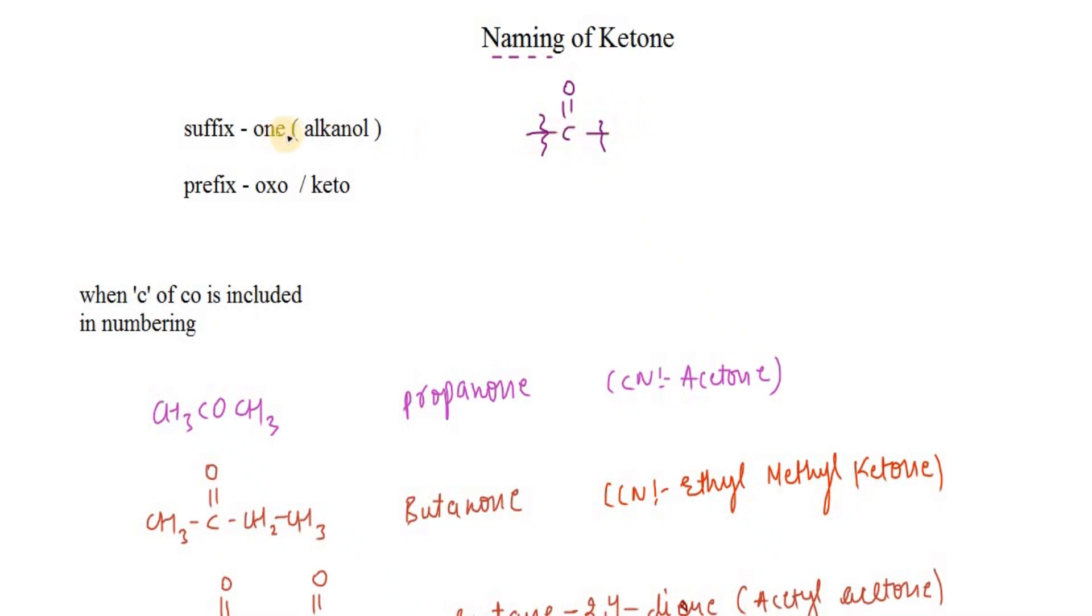There are some groups that are more prior to ketones and some that are less prior in the priority table. When compounds are present which are more prior to ketone, we use the prefix oxo.